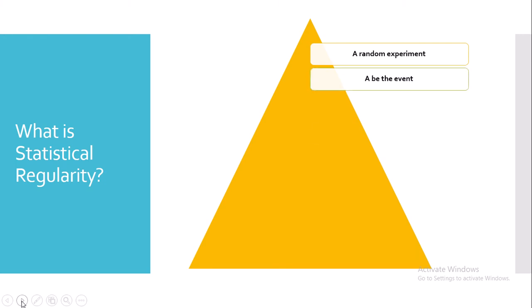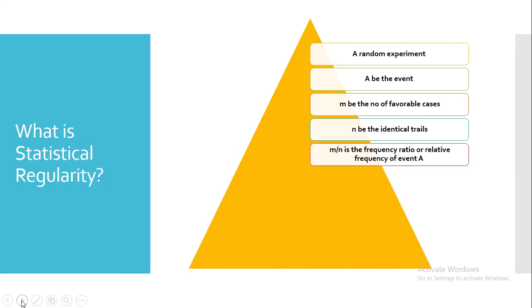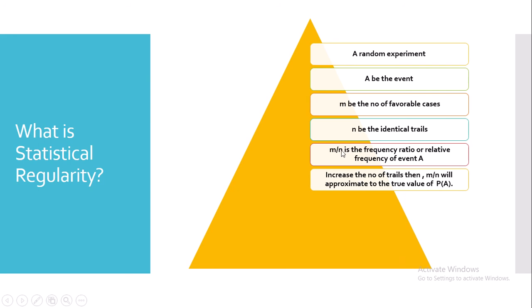What is statistical regularity? Let's consider a random experiment. Let A be the event, m be the number of favorable cases, and n be the total number of identical trials. Consider m by n — that is, the number of favorable cases divided by the total number of cases. That ratio is called the frequency ratio or the relative frequency of the event A. As the number of trials n increases, m by n will approximate to the true value of the probability of the event A.